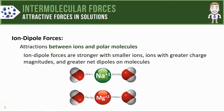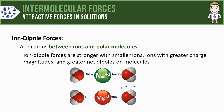This model shows the ion-dipole forces that might form between sodium and magnesium cations and some water molecules. Since the magnesium ion has a +2 charge, it has a greater charge magnitude than sodium does, and it also happens to be a smaller cation. Both of those things suggest that the attractive force between magnesium and the water molecules will be stronger than the attractive forces between sodium and the water molecules.